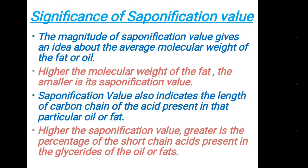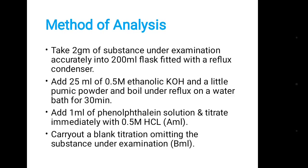Saponification value also indicates the length of the carbon chain of the acid present in that particular oil or fat. Higher the saponification value, greater is the percentage of short chain acid present in the glycerides of oil or fat.